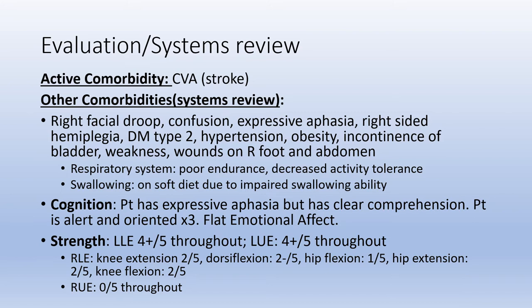Regarding cognition, she has expressive aphasia but clear comprehension. The patient is alert and oriented times 3, but has a flat emotional affect. For strength, her left lower extremity is 4+ out of 5 throughout, as well as her left upper extremity. The right lower extremity shows knee extension 2/5, dorsiflexion 2-/5, hip flexion 1/5, hip extension 2/5, and knee flexion 2/5. The right upper extremity is flaccid, scoring 0/5 throughout.